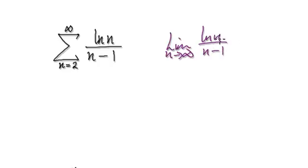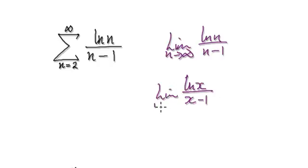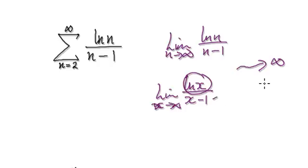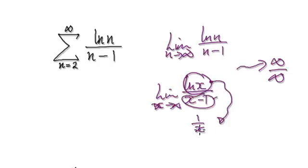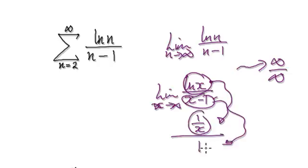Glancing at this, you can't really tell, so you can apply L'Hôpital's rule. Map a function on top of this. As x heads towards infinity, the numerator heads towards infinity and so does the denominator — you've got infinity over infinity, which means you can apply L'Hôpital's rule. Differentiate the top: that gives you one over x. Differentiate the bottom: that gives you one. So that's one over x.